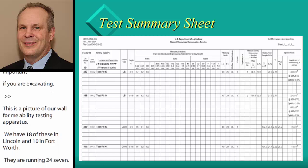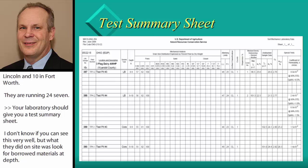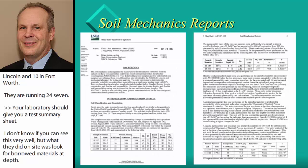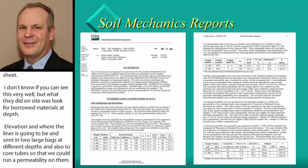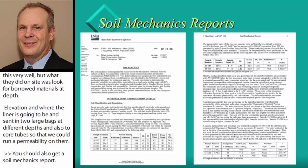Your laboratory should give you a summary sheet. In this example, they looked for borrow materials at depth — at the elevation of where their liner is going to be — and sent in two large bags at different depths as well as two core tubes, so we could run an in-situ permeability on them. You should receive a soil mechanics report that summarizes all testing done, any issues that came up during testing, and recommendations.